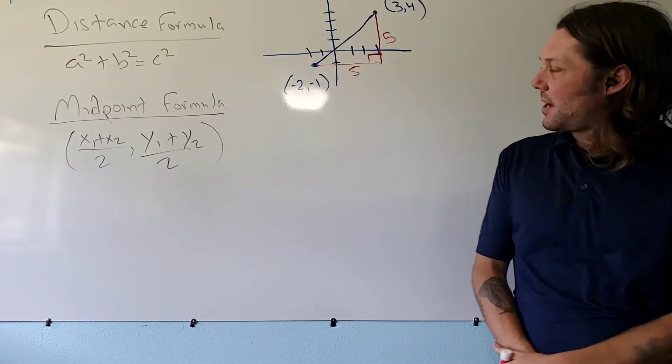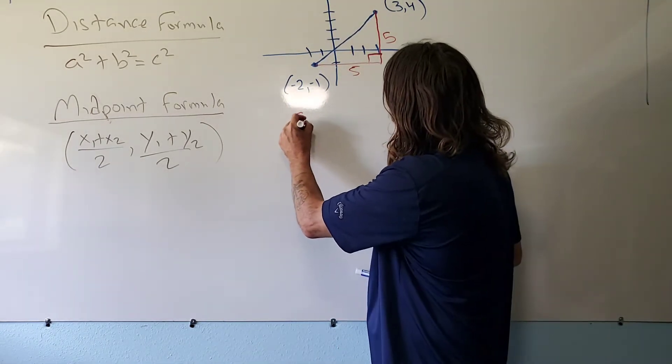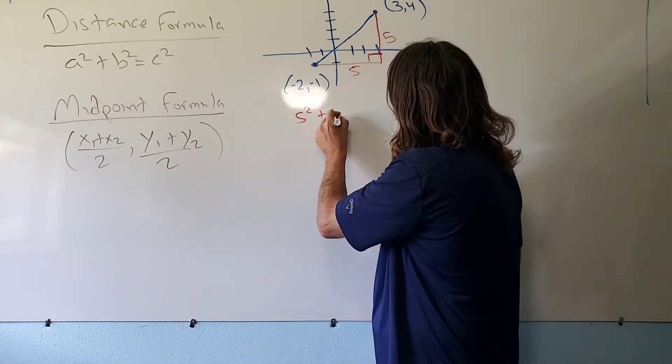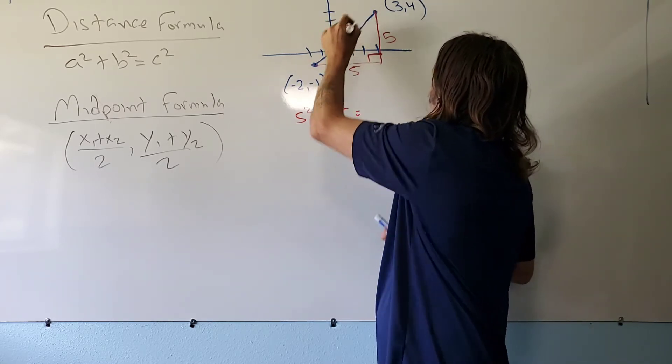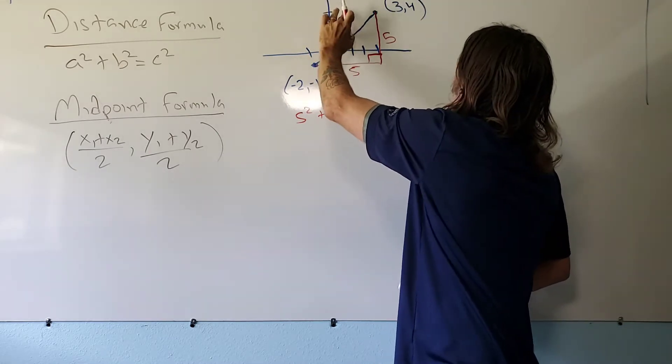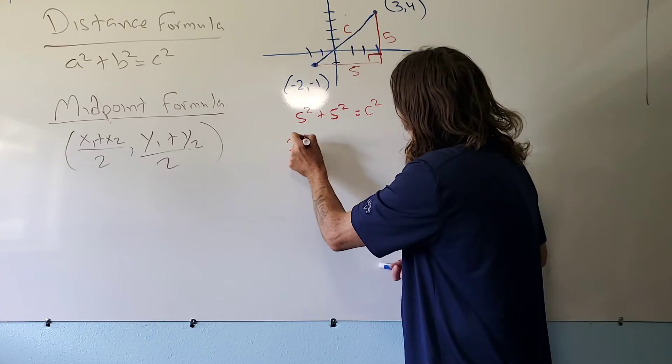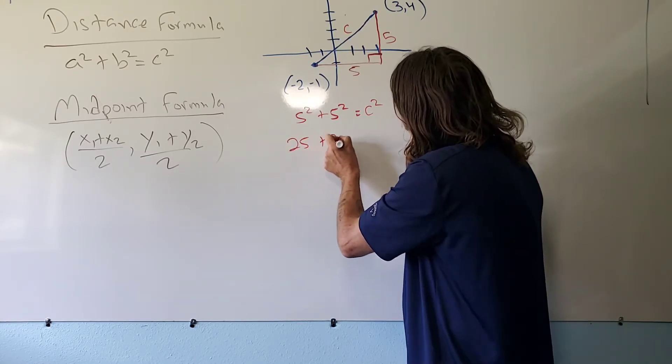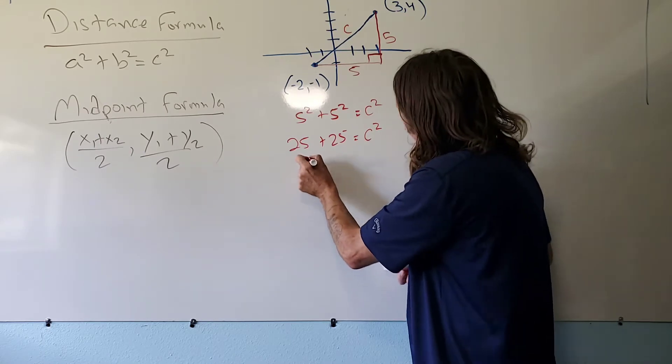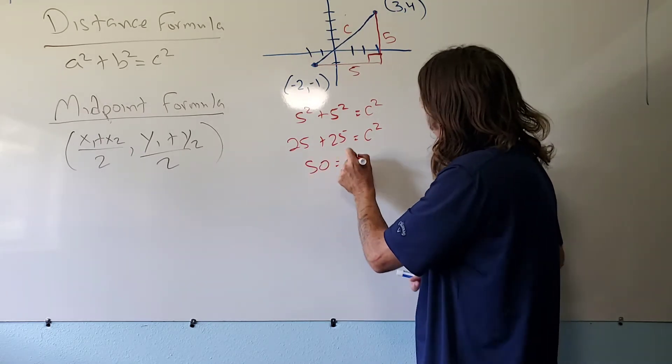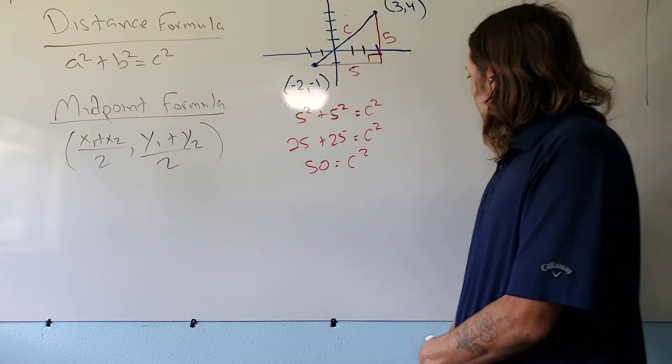Alright, so now I can do my calculation, which would be 5 squared plus 5 squared, and we'll say that that's equal to c squared. This becomes 25 plus 25, and that's equal to c squared. 50 is equal to c squared.